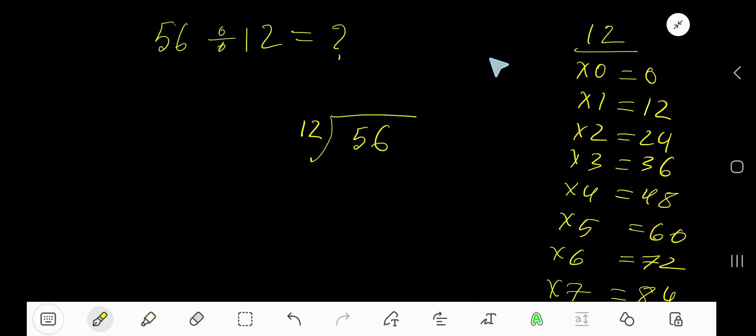56 divided by 12. Here 12 is a divisor, so we need the multiplication table of 12. 12 times 0 is 0, 12 times 1 is 12, 12 times 2 is 24, 12 times 3 is 36, 12 times 4 is 48. To find out the multiplication table of 12, just add 12 with the previous step: 0 plus 12 is 12, 12 plus 12 is 24, 24 plus 12 is 36.